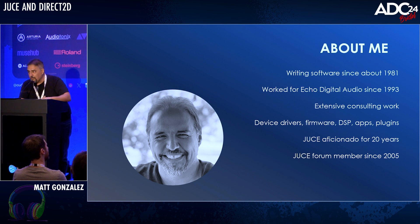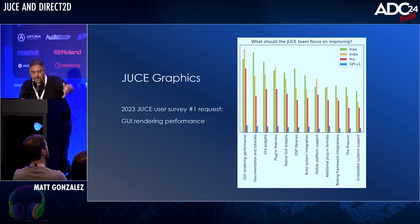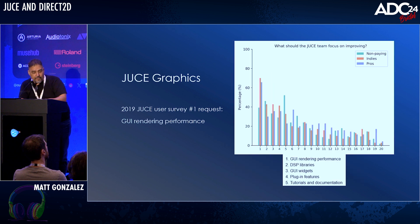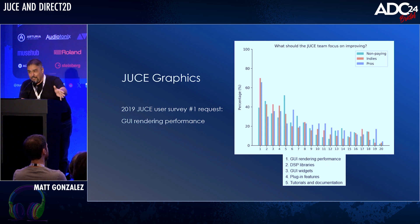Recently I worked with the JUCE team to integrate Direct2D rendering into JUCE 8. In 2023, the JUCE team did a survey of their users — the question was what should the JUCE team focus on improving, and the number one result was GUI rendering performance. A similar survey in 2019 had the same question and the same answer. I suspect a 2015 survey said much the same thing. This has been, and I say this with love as a huge fan of the library, something people have been asking for improvements on for a while.